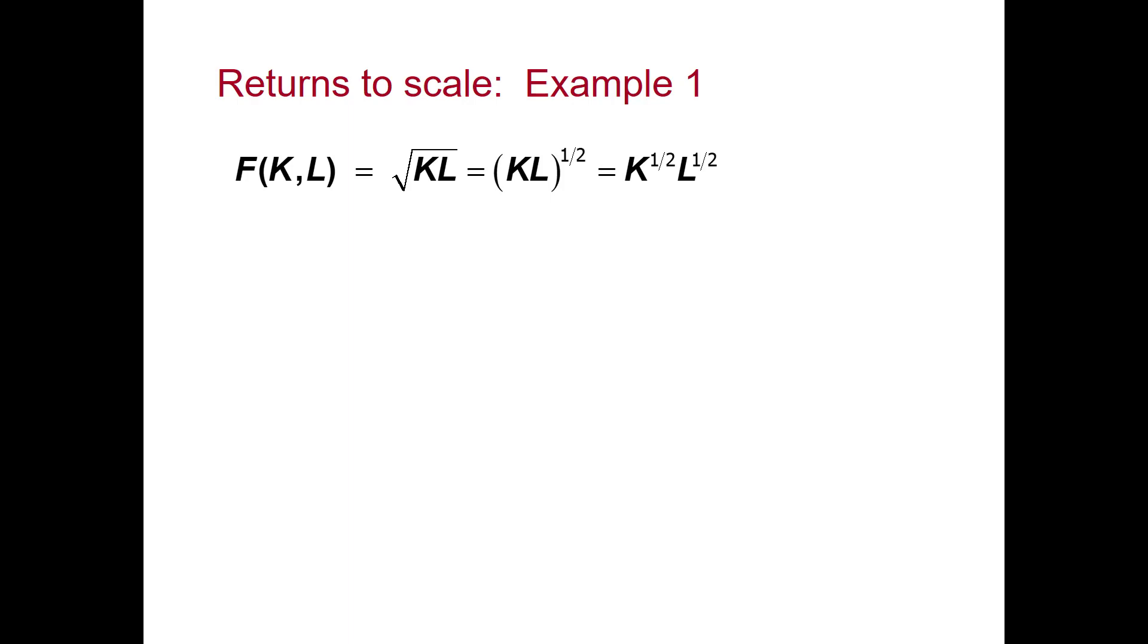So that's a form of the Cobb-Douglas production function, where the exponents, alpha and beta, add up to 1. This is a particular type of Cobb-Douglas production function. So we increase both K and L by the same factor, Z.